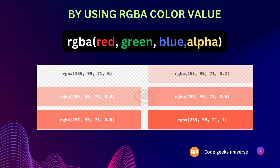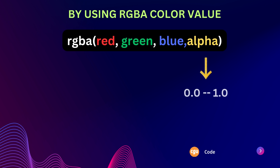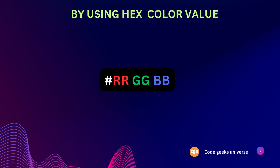Next, we have RGBA values. RGBA color values are an enhanced version of RGB that include an additional alpha channel. This alpha channel determines the level of transparency or opacity for a color. An RGBA color value is specified with the rgba() function containing red, green, blue, and an alpha value. The alpha parameter ranges from 0.0 to 1.0, where 1.0 is completely opaque and 0.0 means fully transparent.